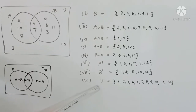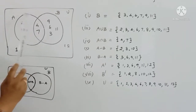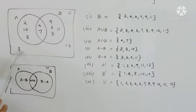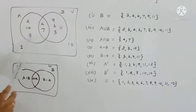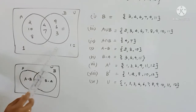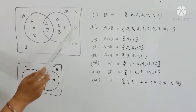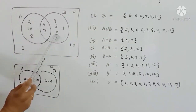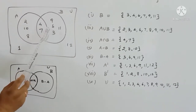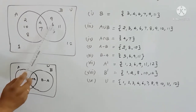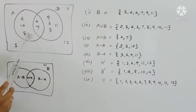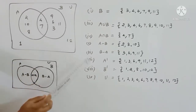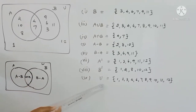The universal set contains: 1, 2, 3, 4, 5, 6, 7, 8, 9, 10, 11, 12.